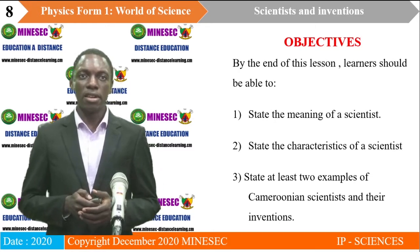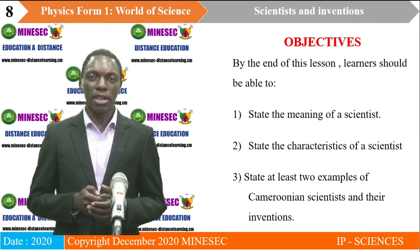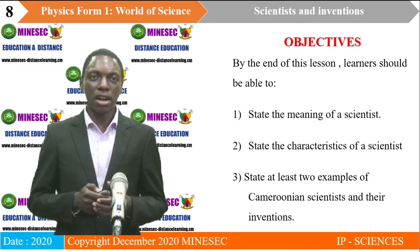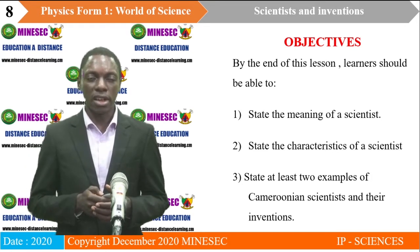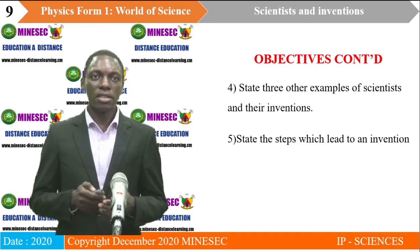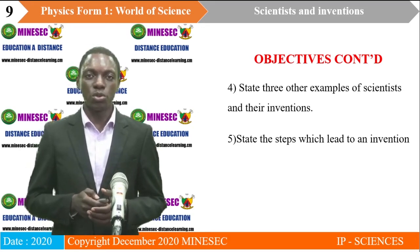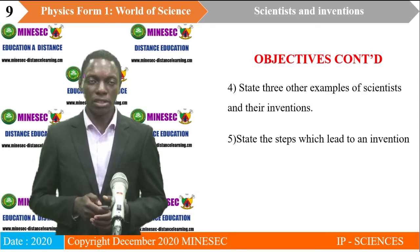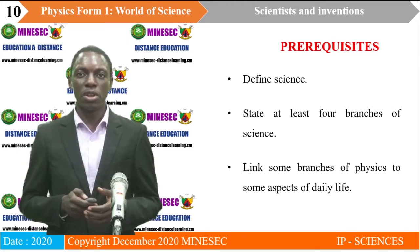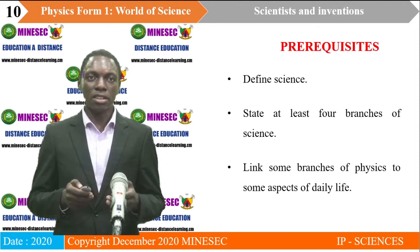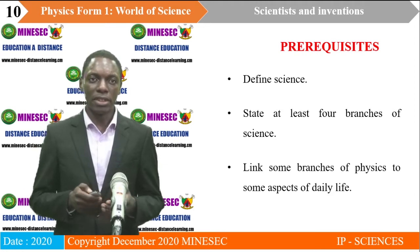By the end of this lesson, you, the learner, should be able to state the meaning of a scientist, state the characteristics of a scientist, state at least two examples of Cameroonian scientists and their inventions, state three other examples of scientists and inventions, and state the steps which lead to an invention. To fully understand the content of this lesson, you should be able to define science, state at least four branches of science, and link some branches of physics to aspects of daily life.